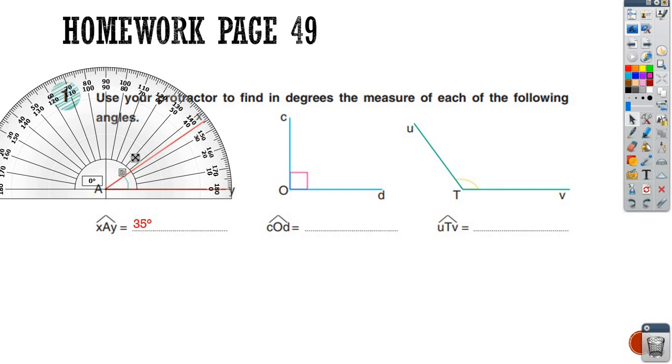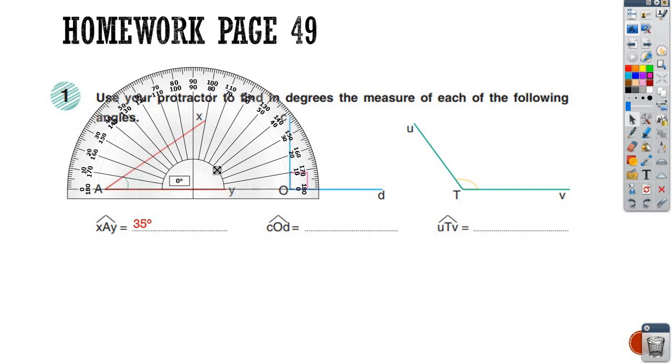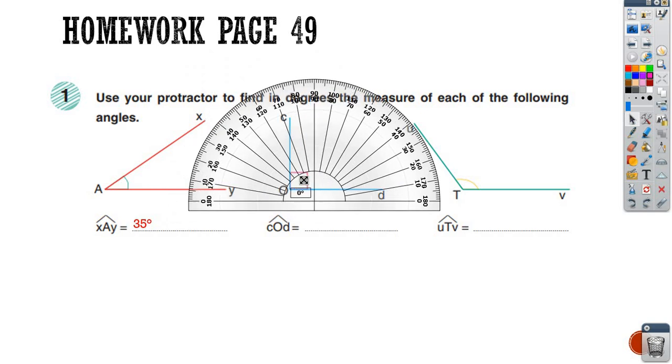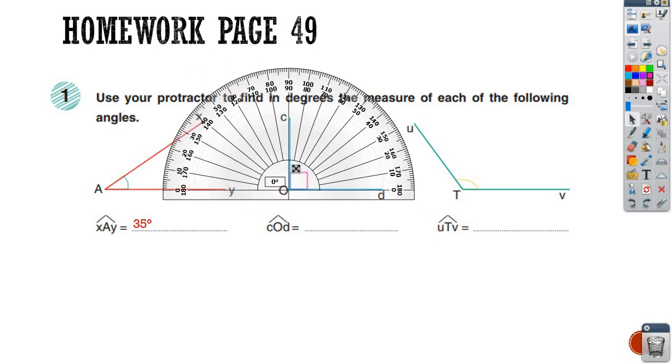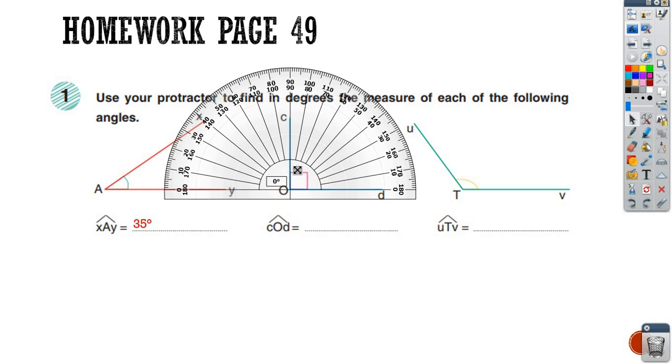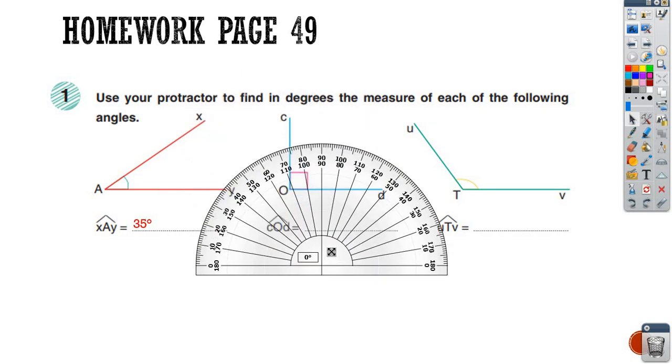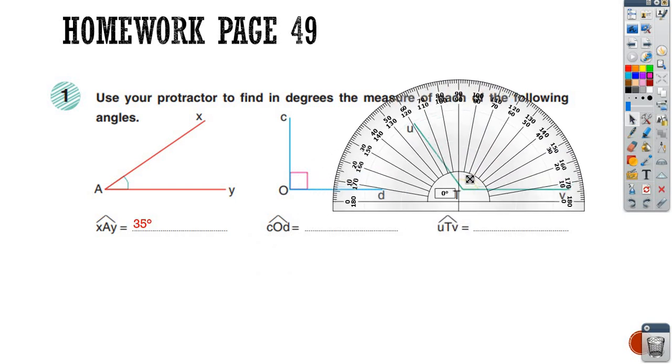The second one you have also to follow the steps, place your protractor on the vertex O. And one of the sides on 0 and the other to reach the other. And you have to write down what is the measure of the second and third angle.